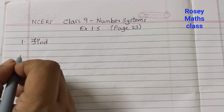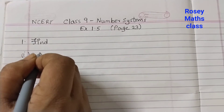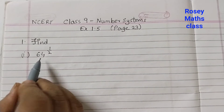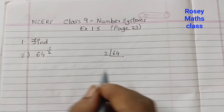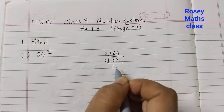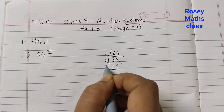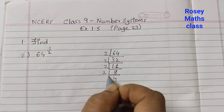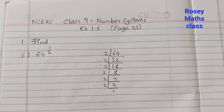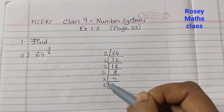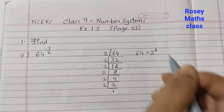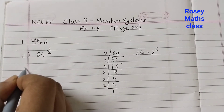First question: find 64 to the power of 1/2. The first step is to find the prime factors of 64. Starting with 2: 64 ÷ 2 = 32, ÷ 2 = 16, ÷ 2 = 8, ÷ 2 = 4, ÷ 2 = 2, ÷ 2 = 1. That gives us six 2s, so 64 can be written as 2 to the power of 6.